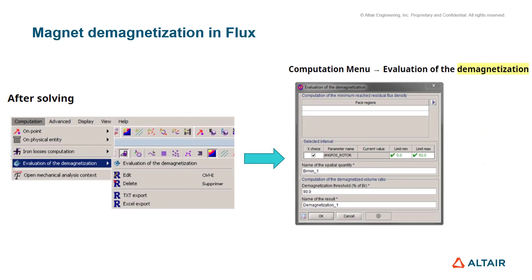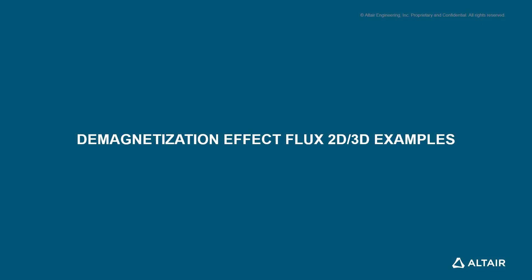This slide shows the steps the user needs to follow once the project is solved to evaluate the demagnetization effect. After solving, the user selects 'Evaluation of Demagnetization' and Flux displays a new window. In this window, we select the face region on which we want to evaluate the demagnetization effect. You also have the option to select the interval, create a spatial quantity, set the demagnetization threshold, the percentage of remaining flux density, and the name of the results. Next, we will see the demagnetization effect using Flux 2D and Flux 3D examples.